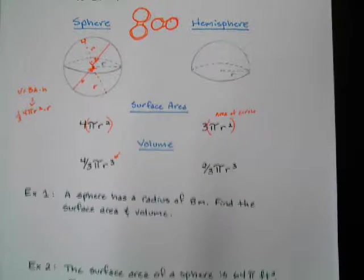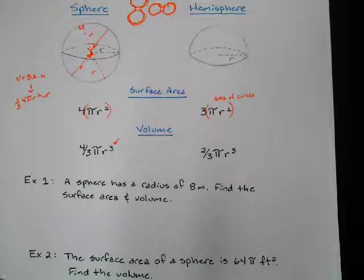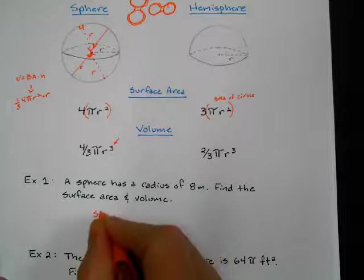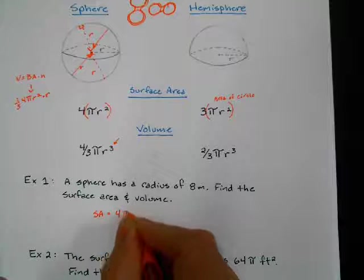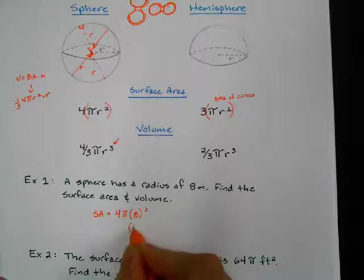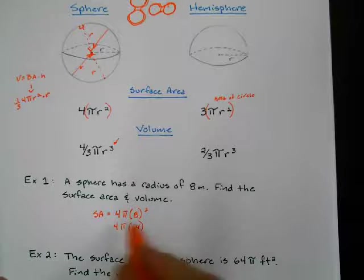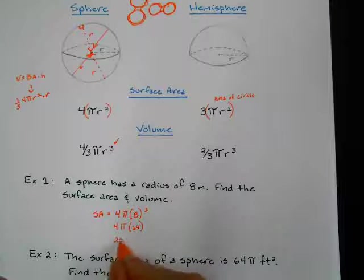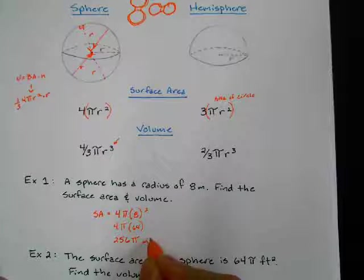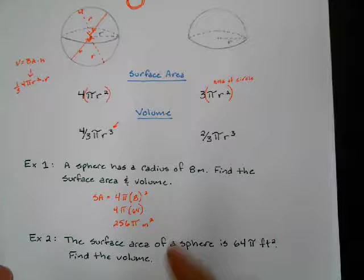Alright, example one. A sphere has a radius of eight. Find the surface area and the volume. So sphere, the surface area, is going to be 4πr, and r is eight squared. So this is 64, and then four times 64 is 256. 256π, and this is going to be meters squared because it's area. Area is always counting the squares.